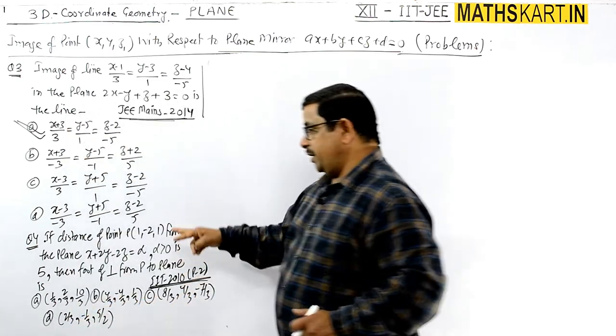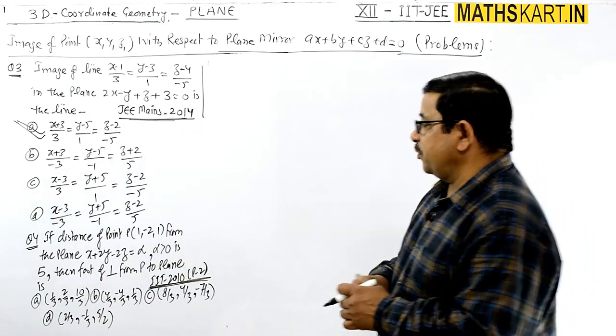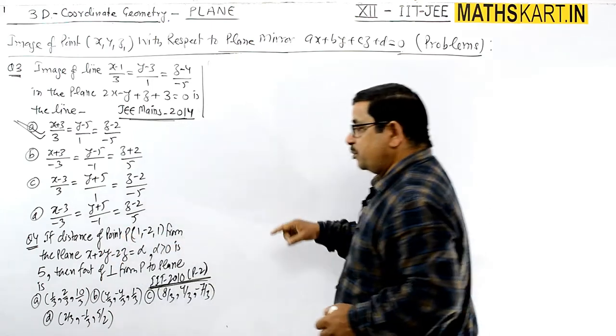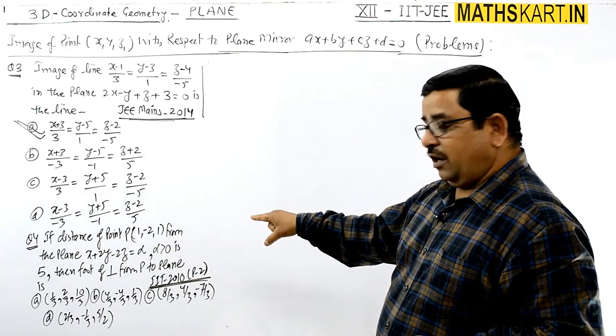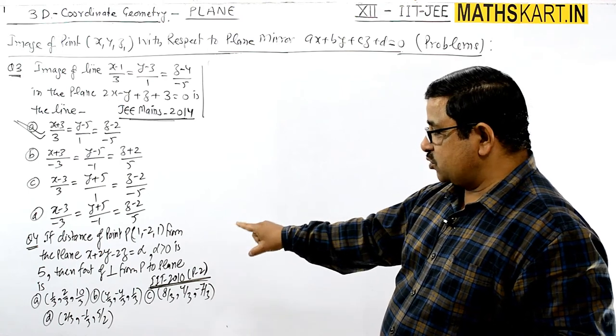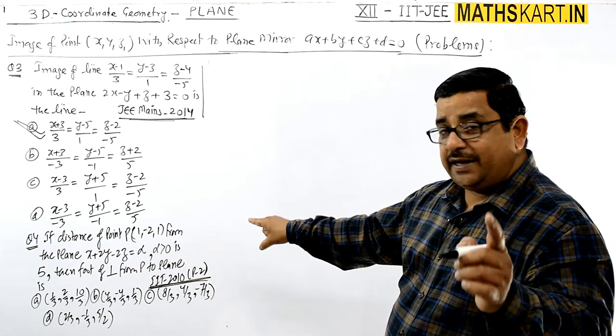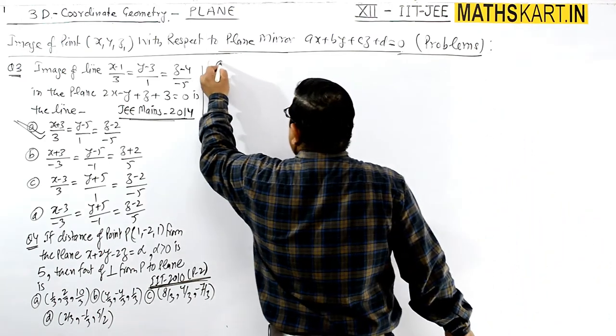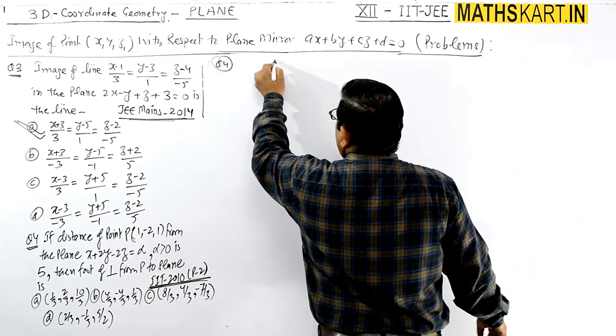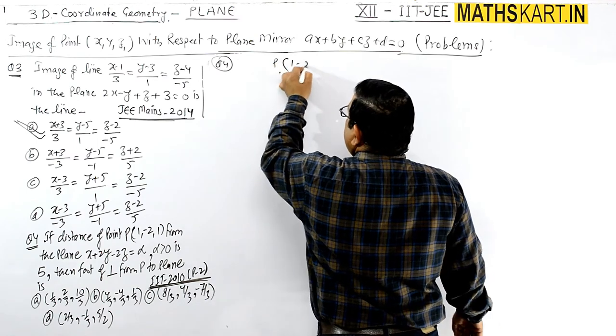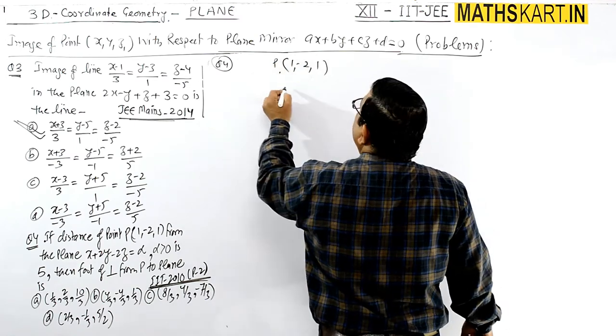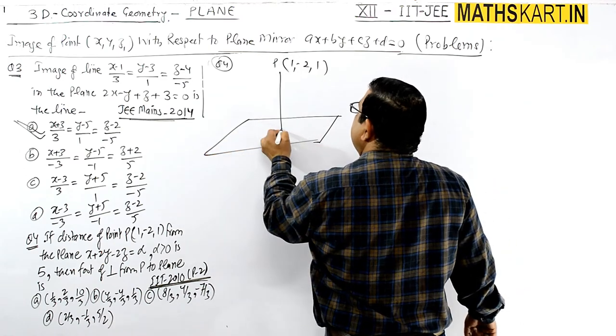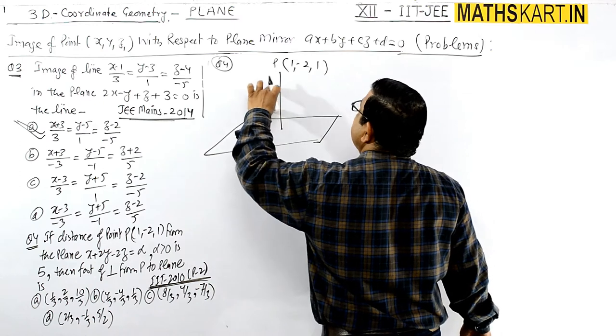After that, the next question is this. If the distance of point P - this point P is there - distance of point P from the plane αx + 2y - 2z = α, where α is positive, is 5. Distance 5 is given. In question 4, point P is given as (1, -2, 1). And this plane is given.